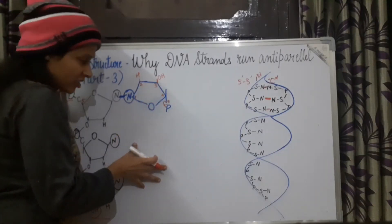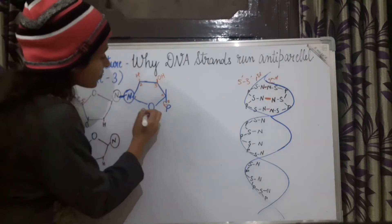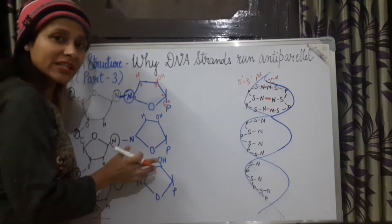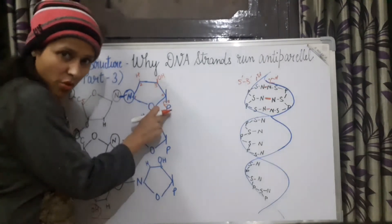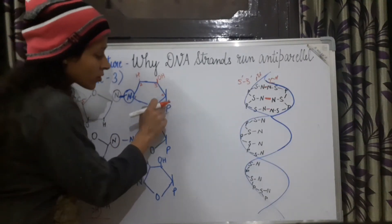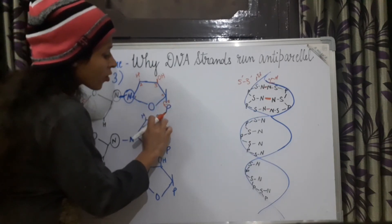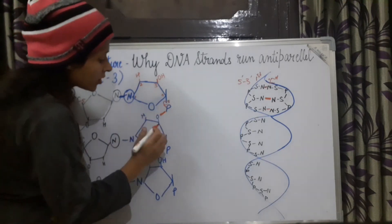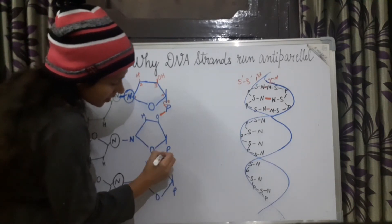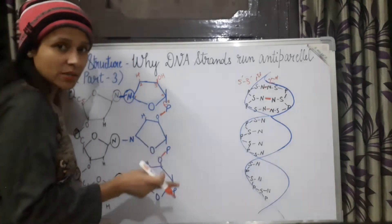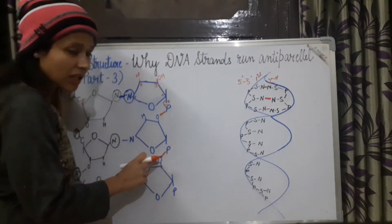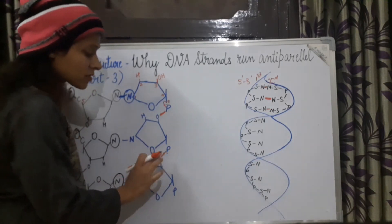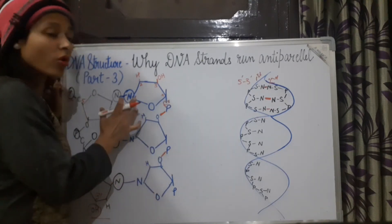Now we attach a second nucleotide to build the polynucleotide chain. In the chain, how is the phosphodiester bond formed between nucleotides? The phosphate of one carbon makes a bond with the hydroxyl group of the next — this is the phosphodiester bond. As discussed in part 2, acid reacts with alcohol, water is eliminated, and an ester bond is formed. This is the way the polynucleotide chain is made.